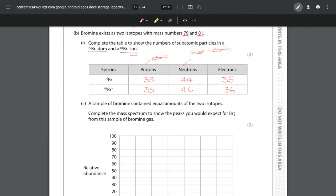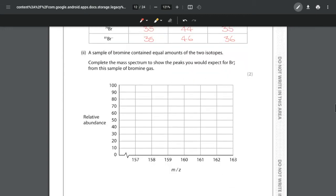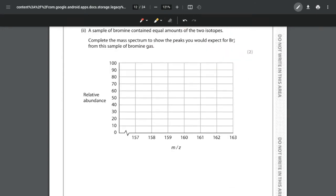For part 2, we've got a sample of bromine that contains equal amounts of the two isotopes, and we want to complete the mass spectrum to show the peaks that we would expect for Br₂⁺ in this sample.